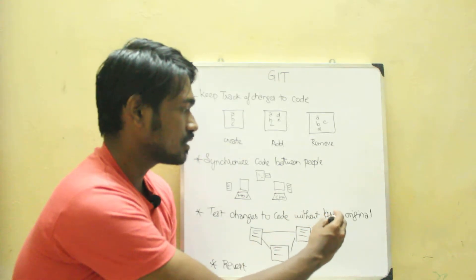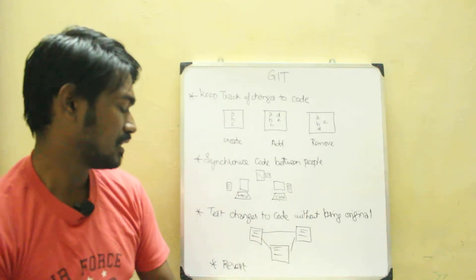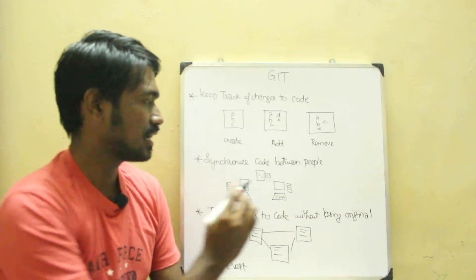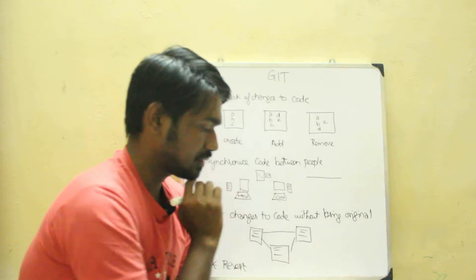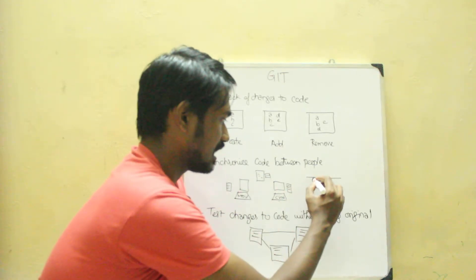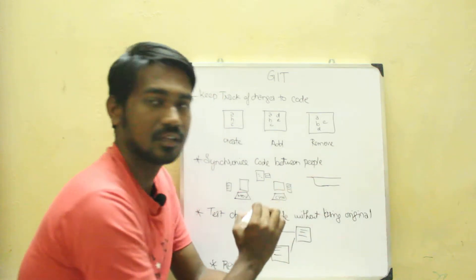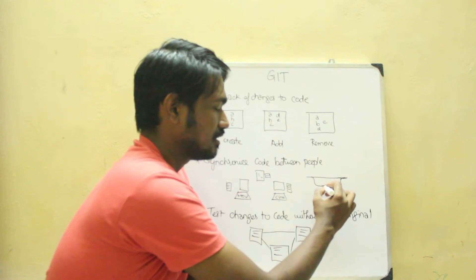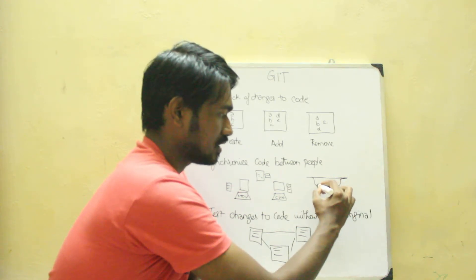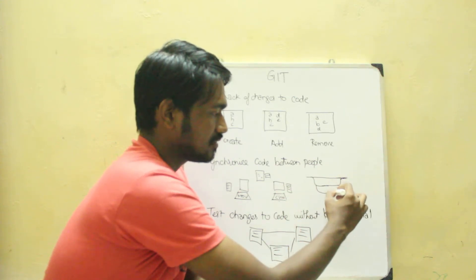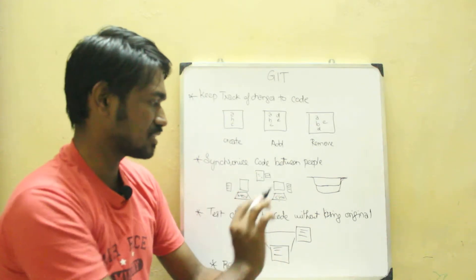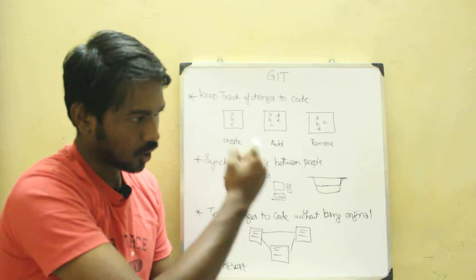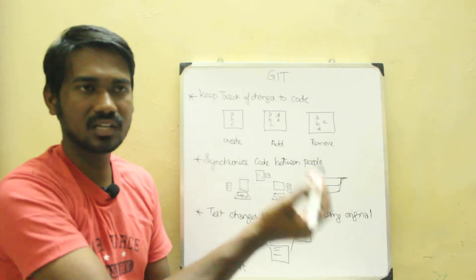Test changes to code without losing the original. What I mean is, let's say we have a file — this is branching and concepts. So what you do is, there is a master branch. If we are not confident enough, we will try another one. On a very high level, this is what we are saying: test changes to code without losing the original. We have a backup, and we develop a new feature.